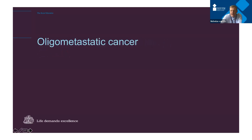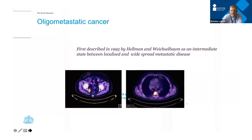One key area is treating oligometastatic cancer — cancer that has spread but to a small number of sites, generally defined as one to three, sometimes one to five. First described in 1995 by Hellman and Weichselbaum, it represents an intermediate stage between localized disease and widespread metastatic disease. The concept is that if you intervene and completely ablate the metastasis, you may prevent further spread and potentially cure patients previously considered incurable.